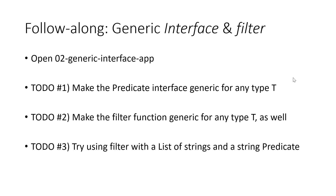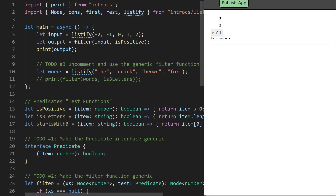What we're going to do next is make a generic interface for the predicate functional interface, then use that as part of a generic filter function — so we have one filter function that will allow us to filter a list of any type as long as we have a matching predicate. Let's open up the o2 generic interface app and follow through the to-dos together.